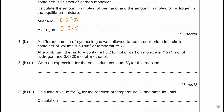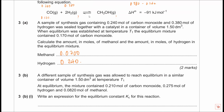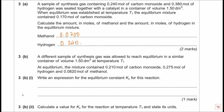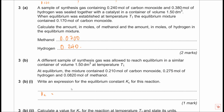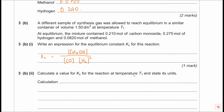Next part: write the expression for the equilibrium constant KC. Products over reactants — so KC equals concentration of CH₃OH, over concentration of CO times concentration of H₂ squared. Remember to include the molar ratio as an index — that's an easy mark.